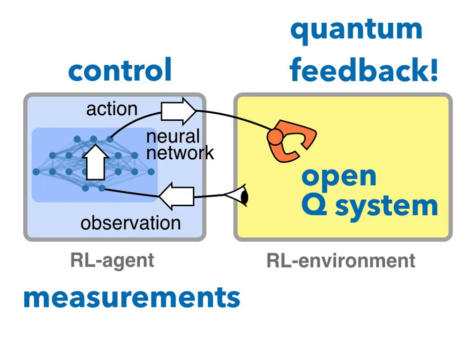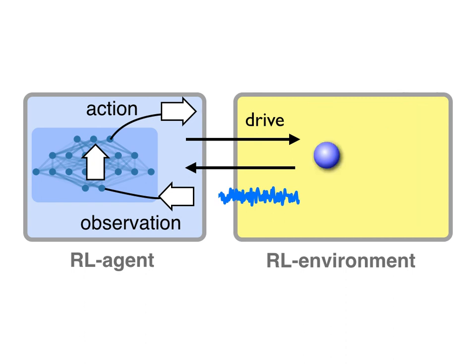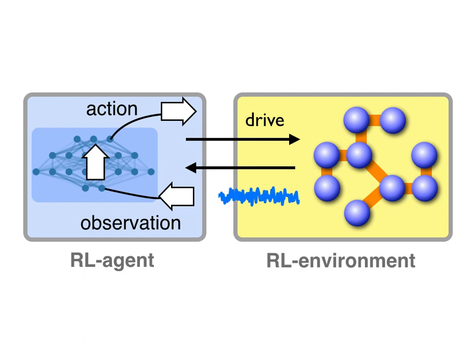Let's go through a couple of examples. One of the simplest open quantum systems is a dissipative harmonic oscillator — physically, just a cavity. You can drive the cavity, changing the amplitude and phase of the drive as an action, and observe by measuring the state of the cavity, for example via a homodyne measurement of the electric field amplitude, or even nonlinear measurements like a photon click detector. You can go further: place a qubit inside the cavity, remove the cavity and only control a qubit, consider a chain of qubits, or a more complicated quantum device such as a small subset of a quantum computer.